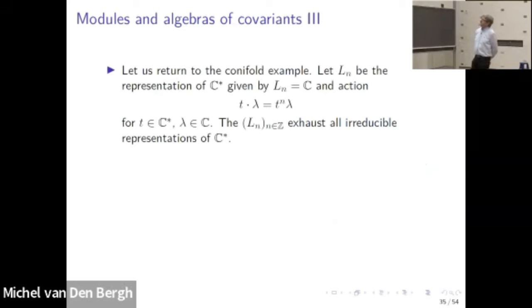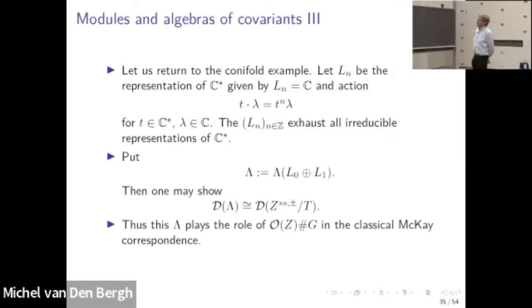Let's go back to the conifold example. Recall this was about the one-dimensional algebraic torus, and this is a very simple group — you can see it from its representation theory. It's reductive, so every representation is a sum of irreducible representations. The irreducible representations are all one-dimensional and indexed by the integers. If I take L₀ and L₁, and then take the algebra of covariants, one may show that one indeed has a derived equivalence, as in the classical derived McKay correspondence.